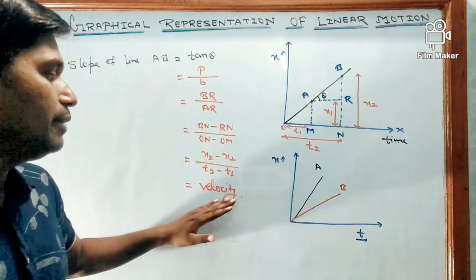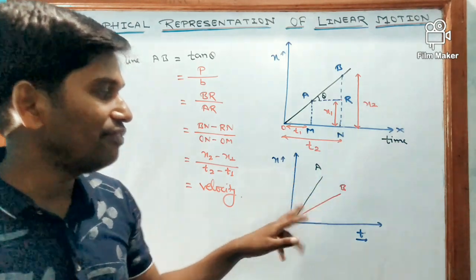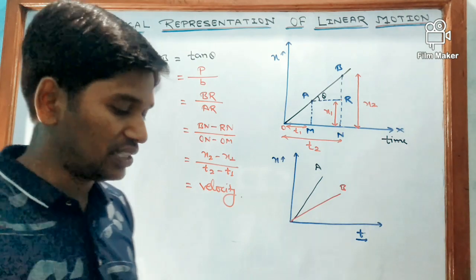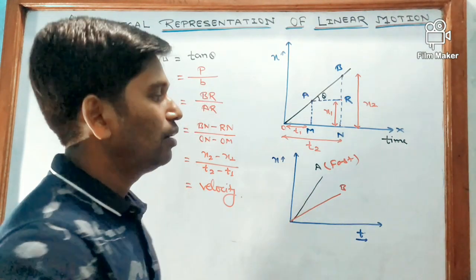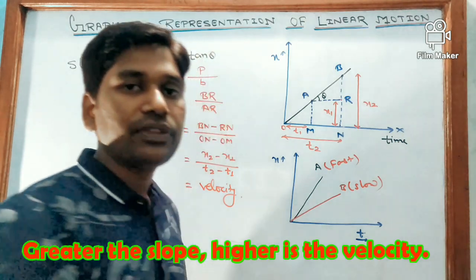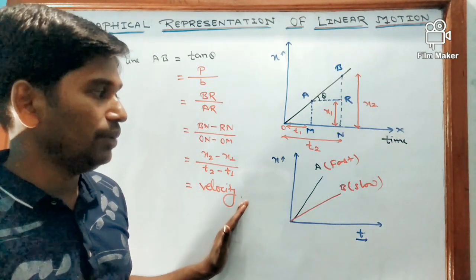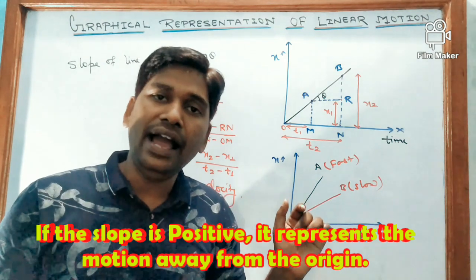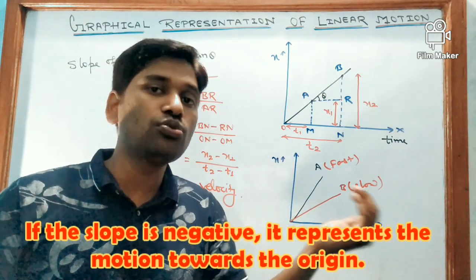So in the figure where graphs are shown for body A and body B, if asked which body is moving faster, our answer is body A moves faster. The reason is that the slope of A is greater than the slope of B, so A moves faster and B moves slower. Also, if the slope is positive it represents the body is moving away from the origin, and if the slope is negative it means the body is moving towards its origin.